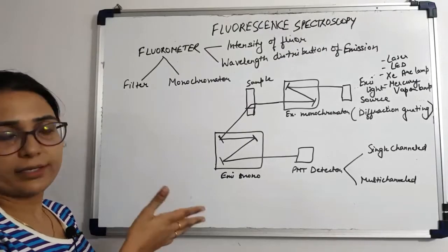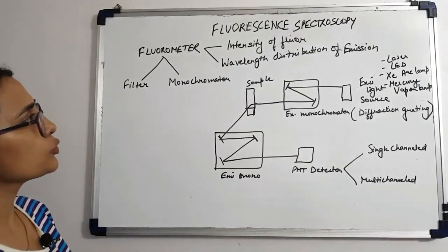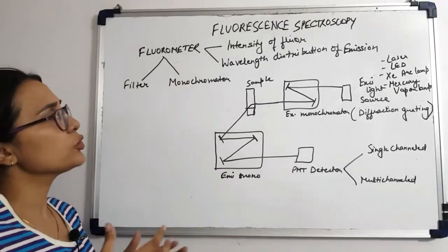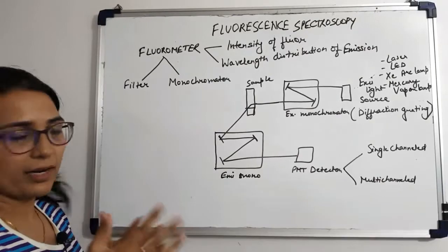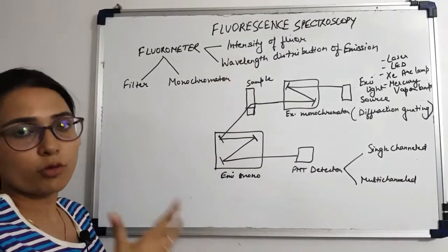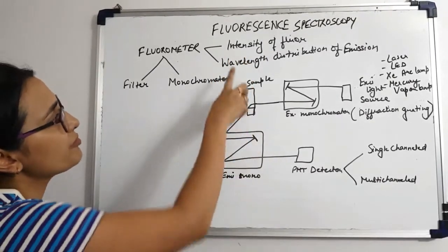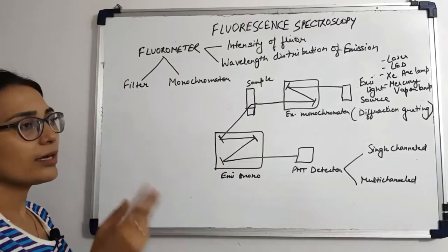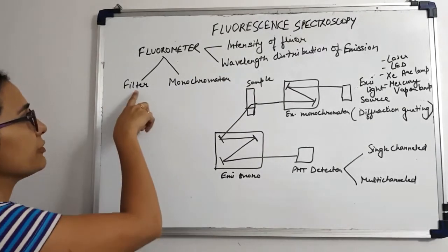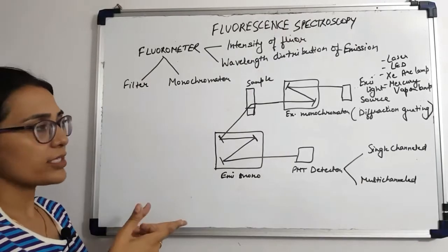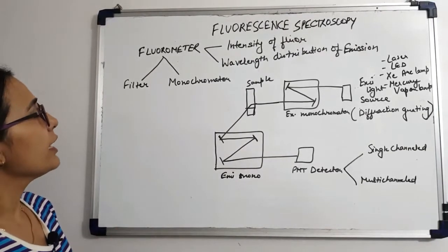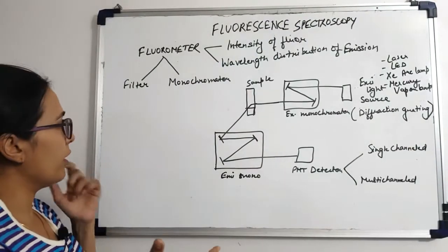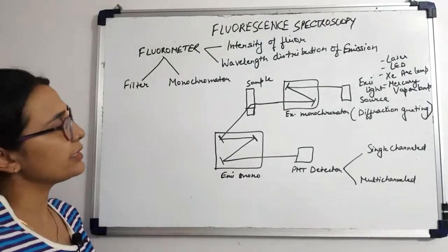Next, let's look at the instrumentation for fluorescence spectroscopy. The instrument used to measure fluorescence is known as a fluorometer. A fluorometer is used to measure different parameters of fluorescence, for example the intensity of fluorescence and the wavelength distribution of emission. There are two different types of fluorometer: one is a filter fluorometer, which uses a filter to isolate the incident light and the fluorescent light, and the other is a spectrofluorometer, which uses a monochromator to isolate the incident light and the fluorescent light.